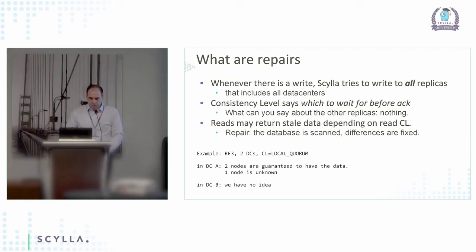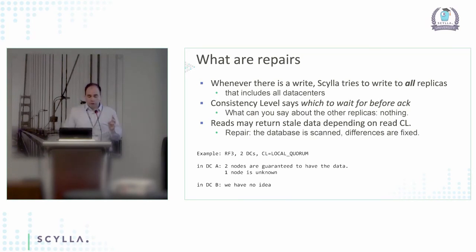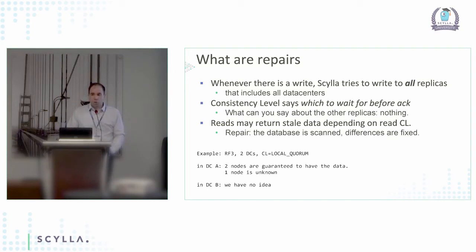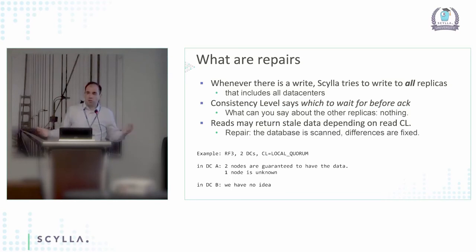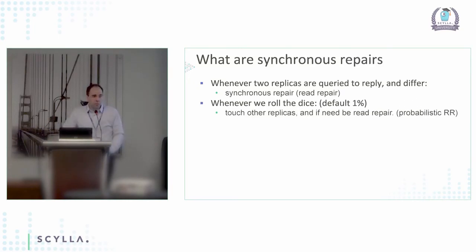In this example, I have replication factor three per data center and two data centers, writing with local quorum. Local quorum means a majority of nodes in this data center must reply for the write to be considered successful. In the first data center, two nodes are guaranteed to have the data. There's a third node you can't say anything about — maybe it has the data, maybe it doesn't. And the second data center — maybe it has the data, maybe it doesn't. Only after repair will they all have the same thing.